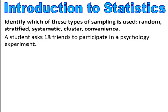Pause and try. This is convenience — he's asking his 18 friends. It's easier to ask your friends than to go door to door, so this is convenience sampling.